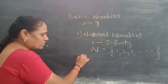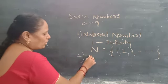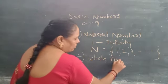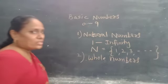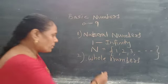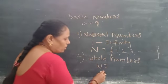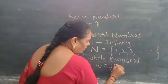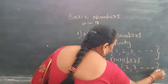Next we go to the set of numbers called whole numbers. The set of natural numbers including 0 are called whole numbers, which are represented by the letter W, and written as W equals 0, 1, 2, 3 and so on.